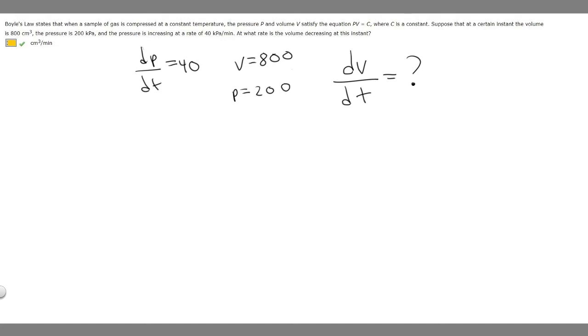Now that we've got all that laid out, we can solve. They tell us that the formula is PV equals C. What we want to do first is, we're trying to find the rate of change of V. If we differentiate with respect to time, that'll give us dV/dt in our equation, and then we can solve.